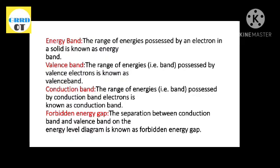First, we will discuss the energy band. The range of energies possessed by an electron in a solid is known as an energy band. The range of energies possessed by valence electrons is known as the valence band. We also have the conduction band and the forbidden energy gap.